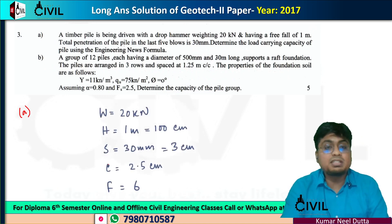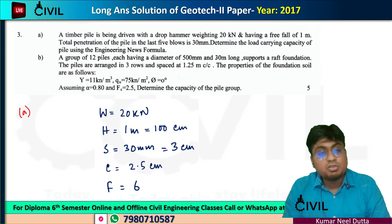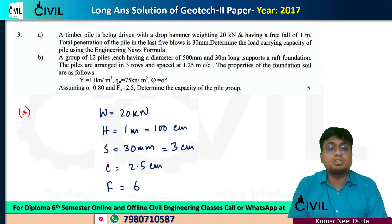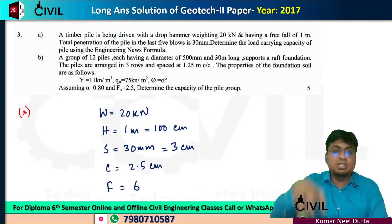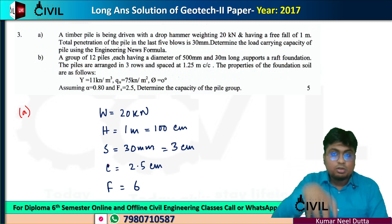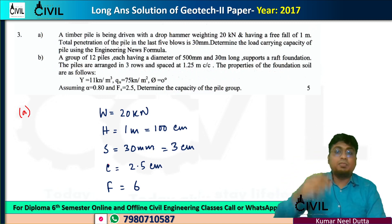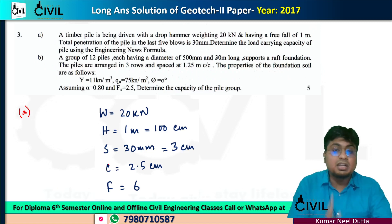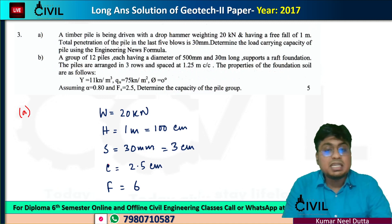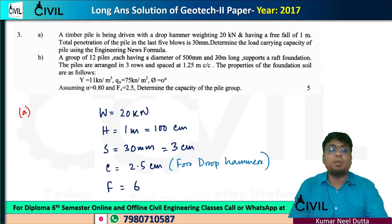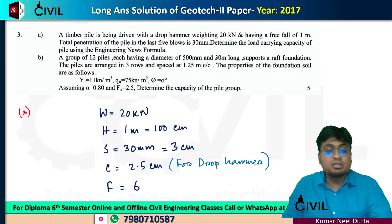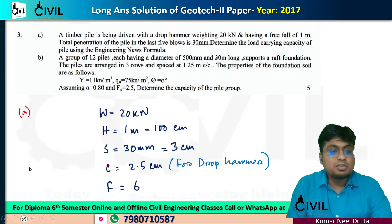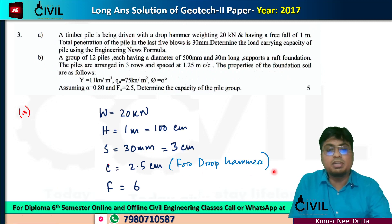Given data: W is the weight of drop hammer = 4 kN. H is the drop height = 1 meter. S is the penetration = 30 mm = 3 cm. C is a constant for drop hammer; for a single acting or drop hammer it is 0.25 cm.